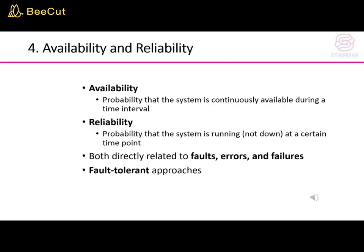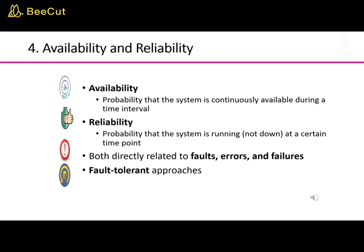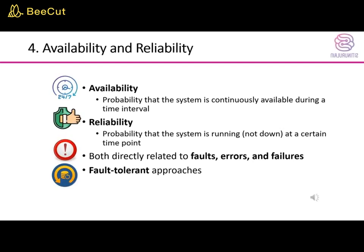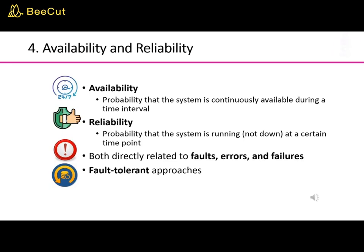Availability is the probability that the system is continuously available during a time interval. Reliability is the probability that the system is running, not down, at a certain point in time. Both are directly related to faults, errors, and failures, and are addressed through fault-tolerant approaches.